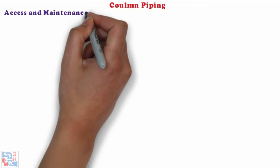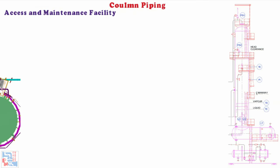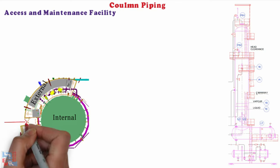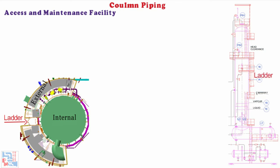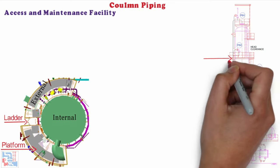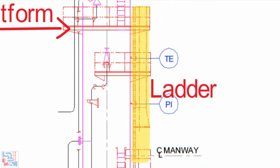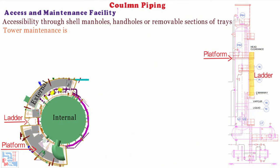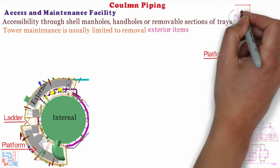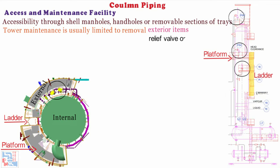Now comes access and maintenance facility. Access whether internal or external is very important. This includes accessibility of connections from ladders and platforms and internal accessibility through shell manholes, handholes or removable sections of tray. Tower maintenance is usually limited to removal of exterior items for example relief valve or control valves, or interior components for example trays or packing rings for which we have discussed in last video.